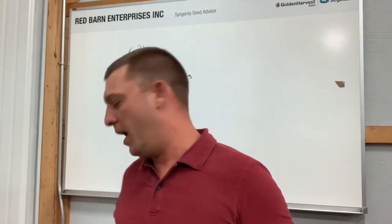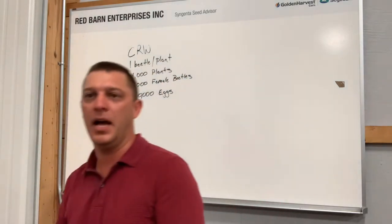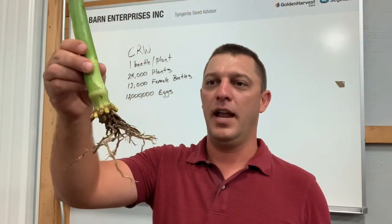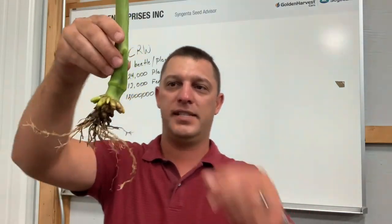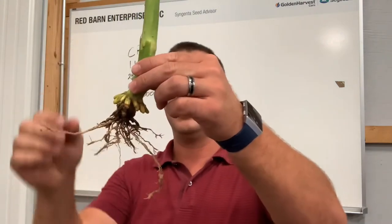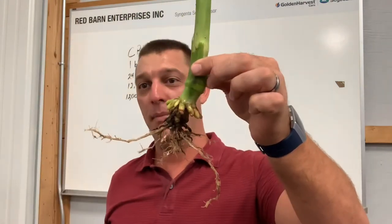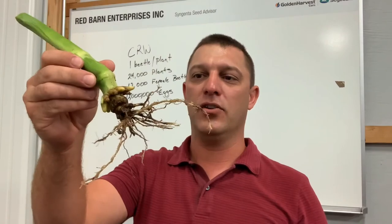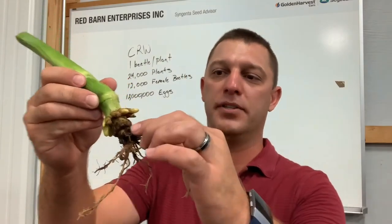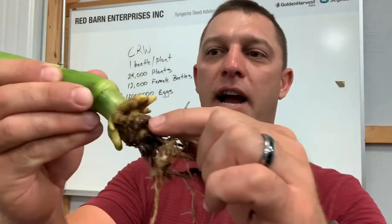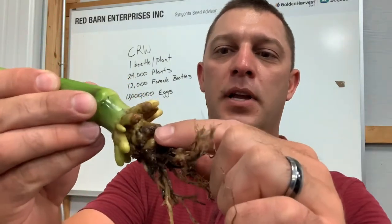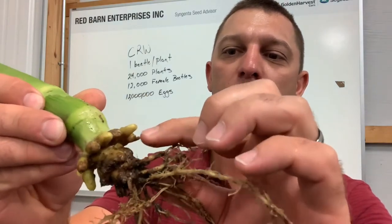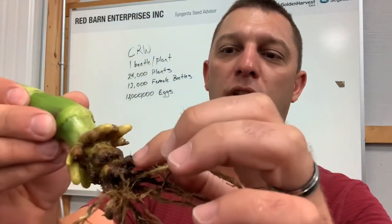I'll pick up a root mass here that I pulled out of this field. As you can see, this is a root mass that's been severely damaged by corn rootworm. These roots right in here that are all brown — I talked about that a couple weeks ago — those will not regrow.